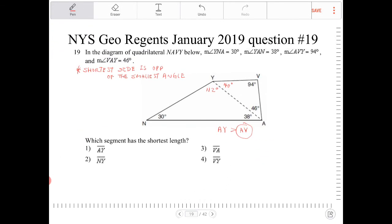So again, if what I've said was a little too fast, I encourage you to pause and rewatch or re-listen to what I've said here. AV is going to be the shortest side, which corresponds with answer choice number three.